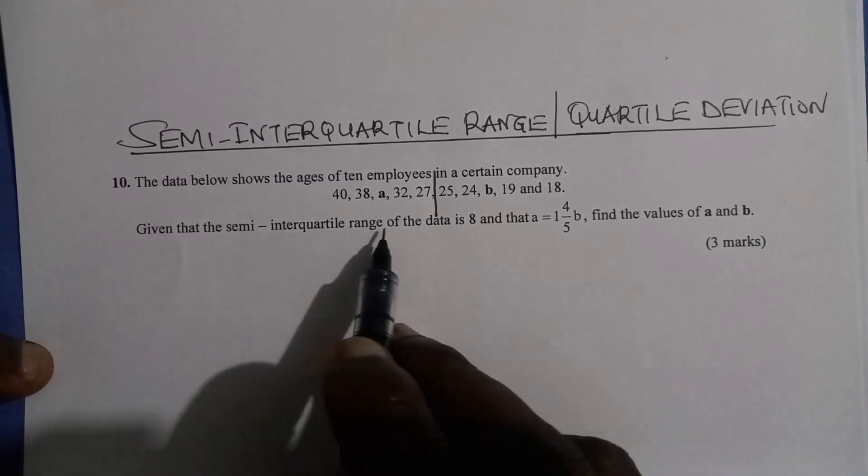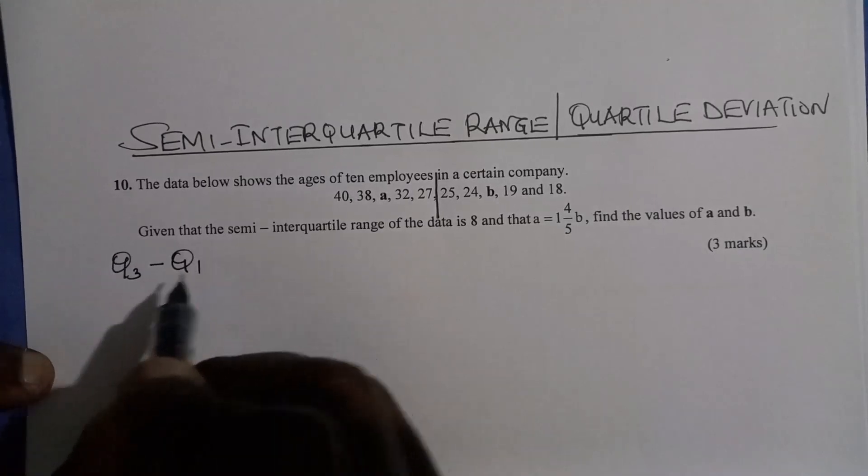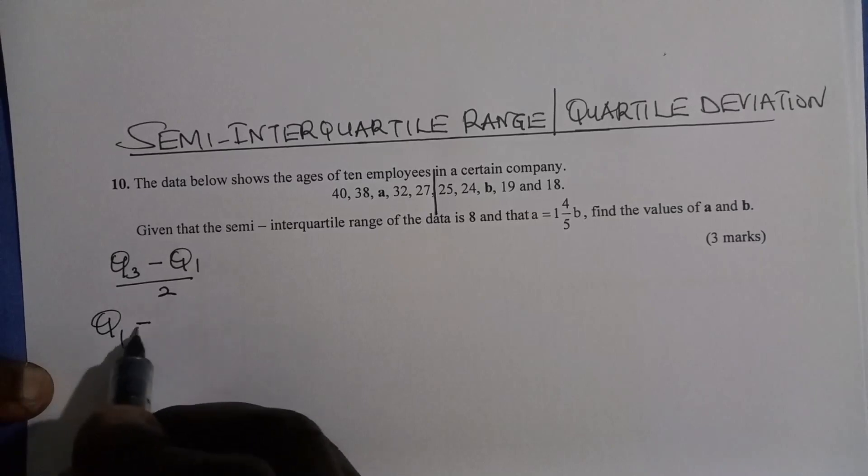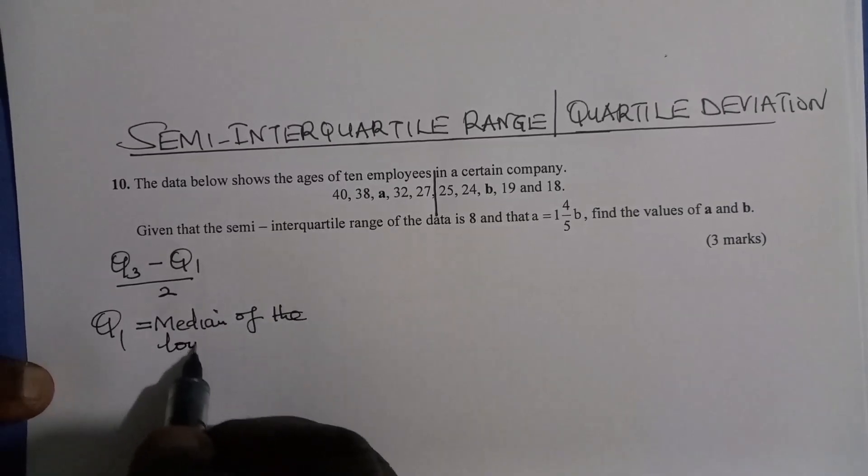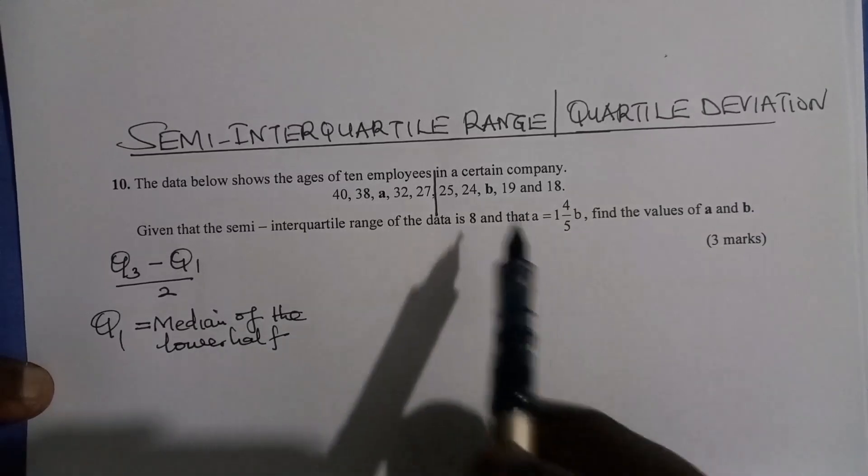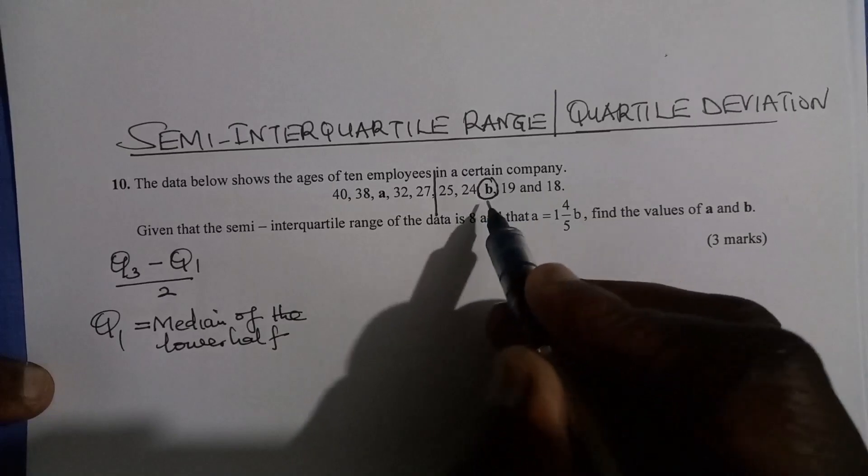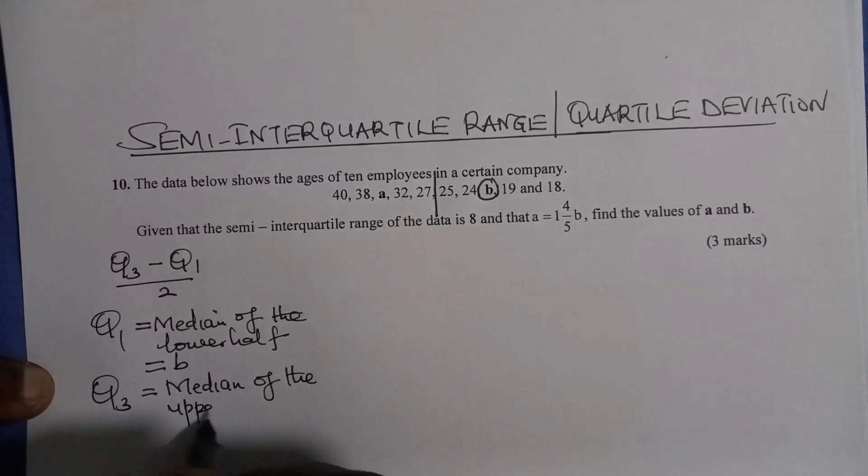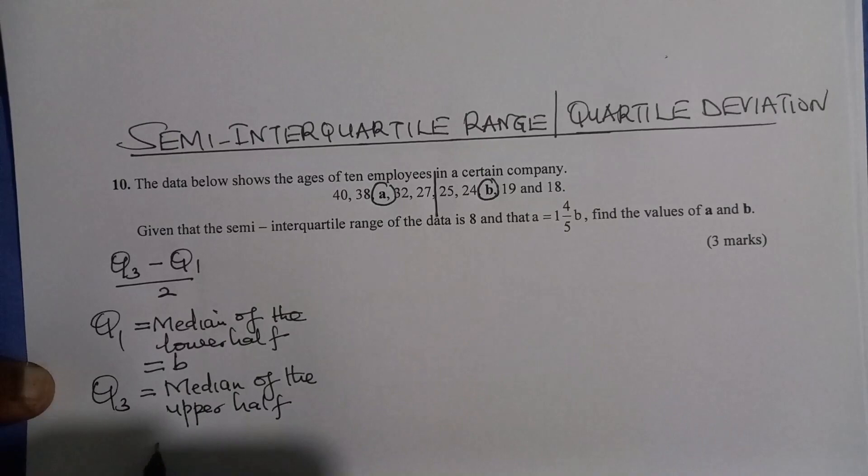Now to get semi-interquartile range, this is the formula we use. Semi-interquartile range is given by Q3 minus Q1 divided by 2. Q1 is the median of the lower half. The lower half is here beginning from 25 all the way to 18. The median is directly here, the middle value, it is B. So Q1 is B. Then Q3 is the median of the upper half. The median is A. So Q3 is equals to A.